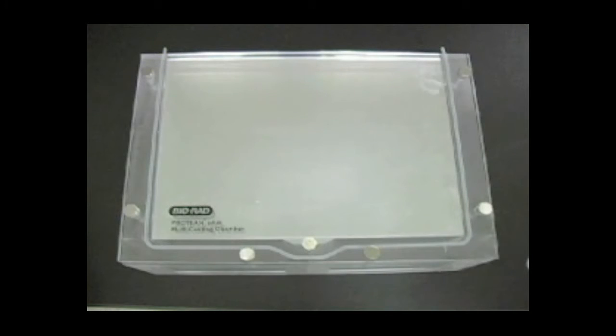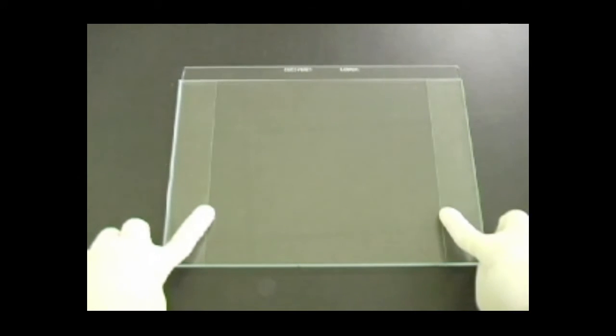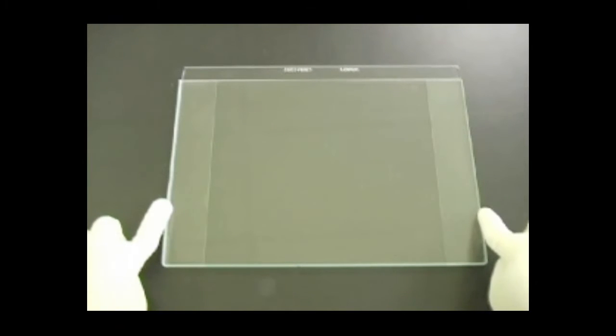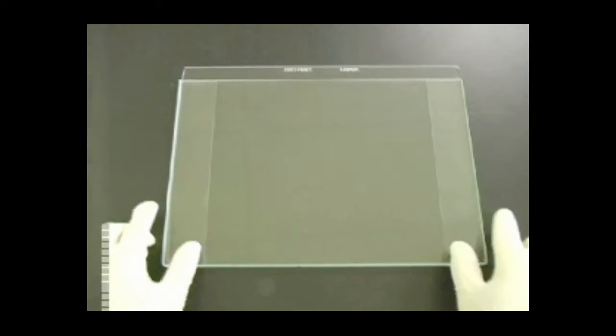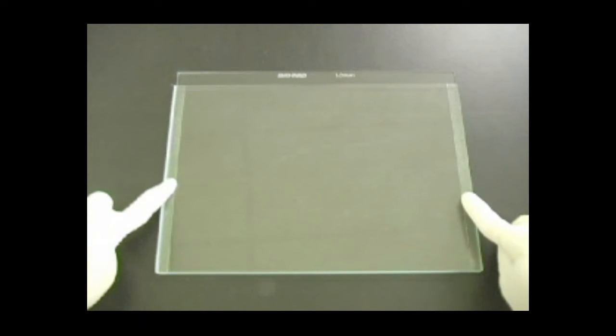Assemble the Protean Plus multicasting chamber with the desired amount of Protean Plus hinged spacer plates in the desired gel thickness and width. Protean Plus hinged spacer plates have two widths: 20 cm wide to fit either 17 and 18 cm IPG strips, or 25 cm wide to fit 24 cm IPG strips, as well as three different gel thicknesses of 1, 1.5, and 2 mm.